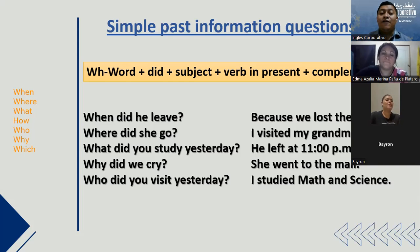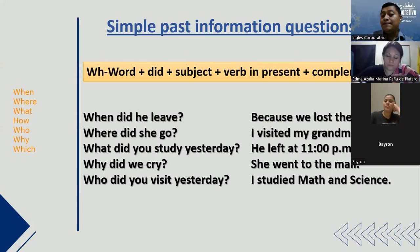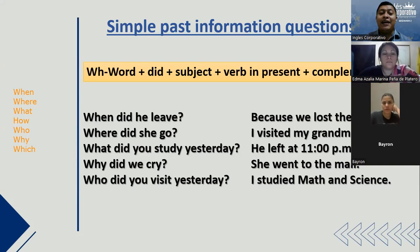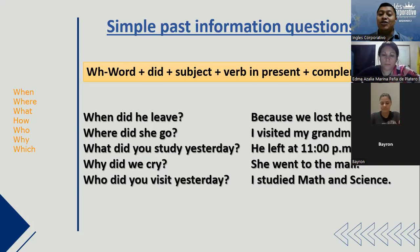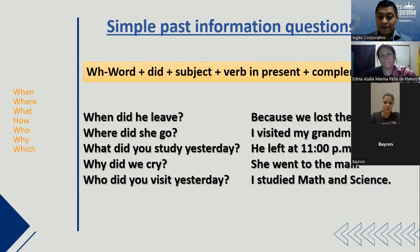In this type of question, you cannot say just yes or no — you have to give information. That's why the name: simple past information question. For every one of these questions, you have to provide information. For example, 'where did you go today?' — I went to the bakery, I went to work, I went to the supermarket, I went to the restaurant. You give information.